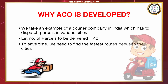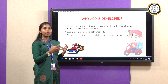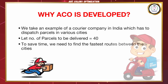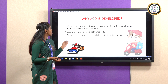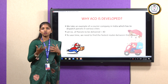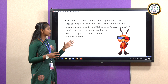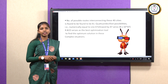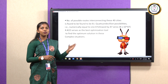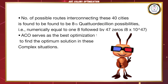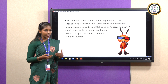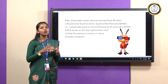So why was ACO developed? Let us say for example we have a courier company in India and there are multiple cities that this company has to deliver parcels to. Say the number of parcels to be delivered are 40. To save time, we need to find the shortest and fastest route to deliver all these parcels. The number of possible routes connecting all these 40 cities will be 8.15 quattuordecillion possibilities, which is 8 followed by 47 zeros — that is 8 into 10 to the power 47. The ACO algorithm is used to find the optimal solution because the human brain cannot function with such enormous numbers.